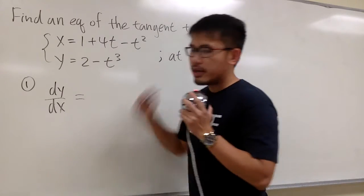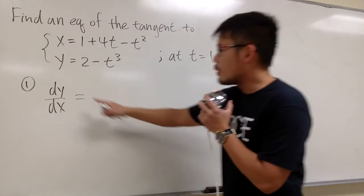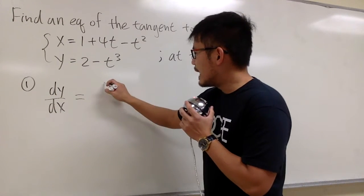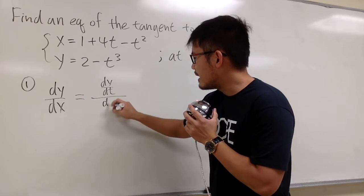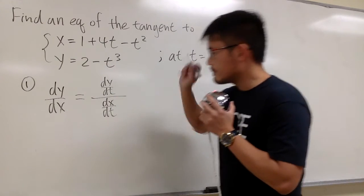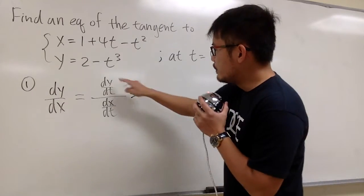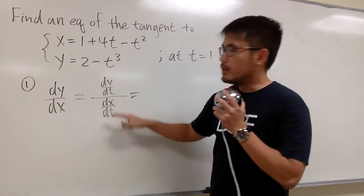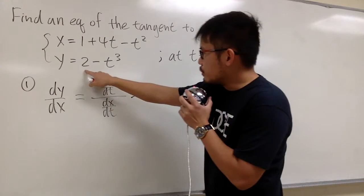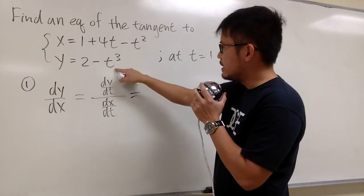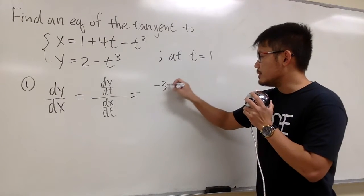This is the parametric equation, so be sure you know to get dy/dx we have to get dy/dt and then divide it by dx/dt. If you look at dy/dt, we go to the y equation and do the usual derivative. Derivative of 2 is 0, derivative of negative t to the third power, we get negative 3t squared.